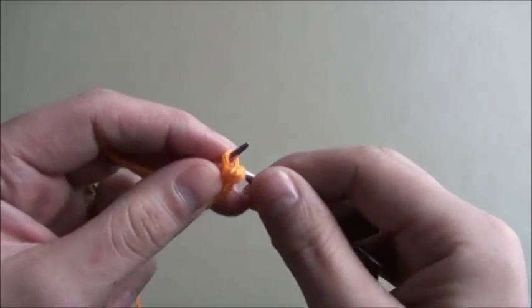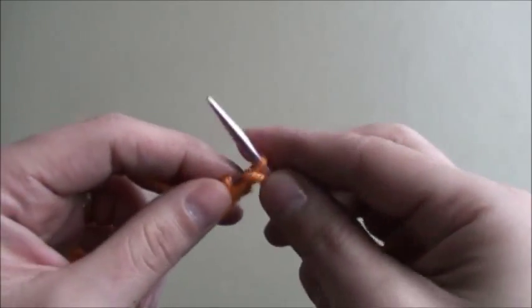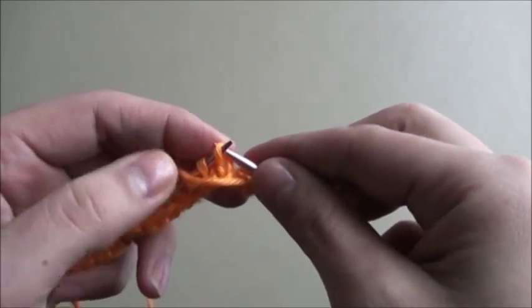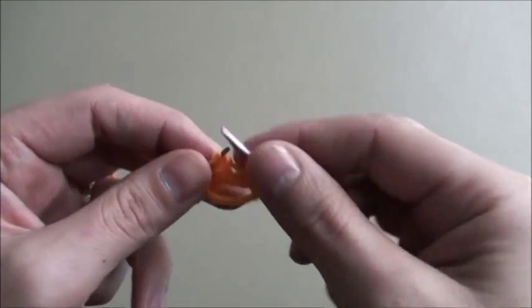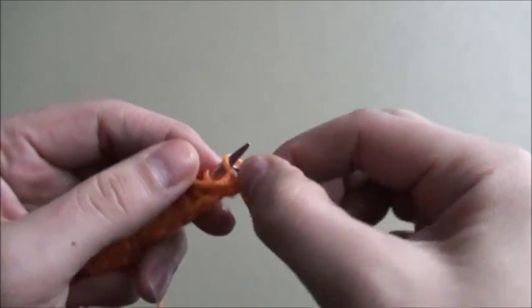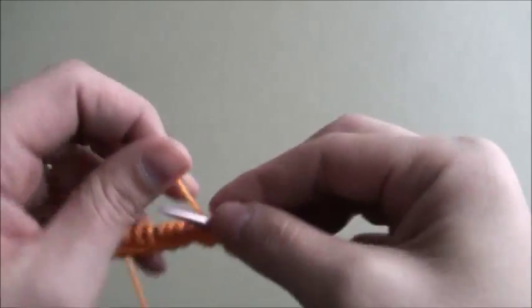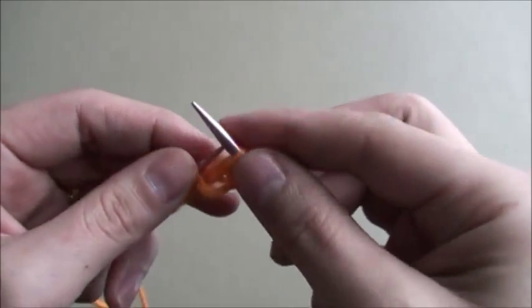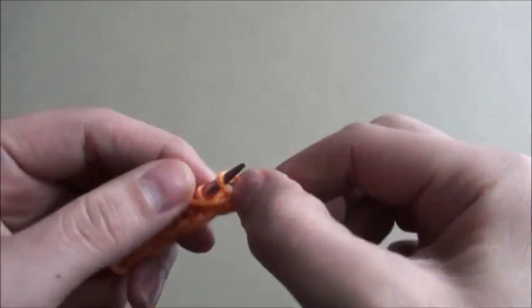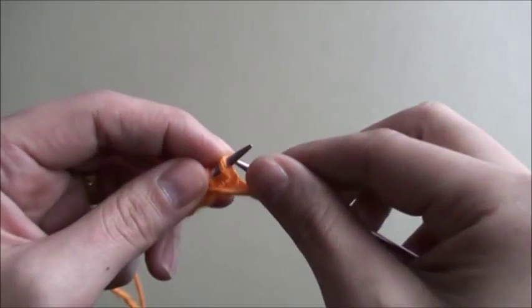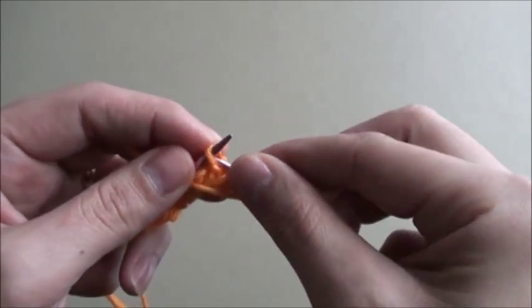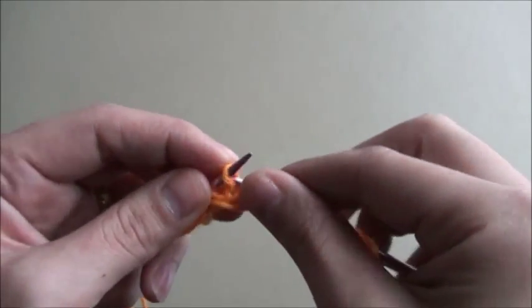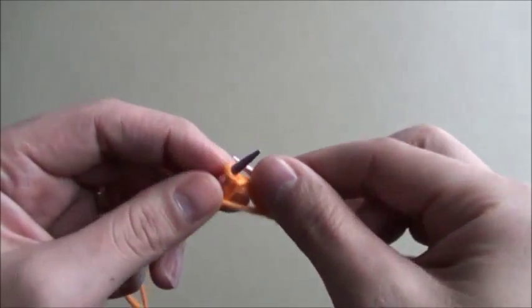Now for row 2 we will purl 2 and then we will slip 2. But we will leave the yarn purlwise, then purl 2 and slip 2, purl 2, slip 2, purl 2 and slip 2. So we will repeat this throughout this row.